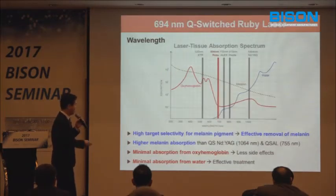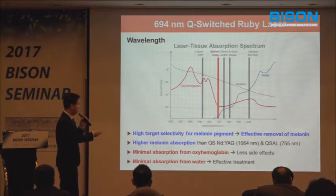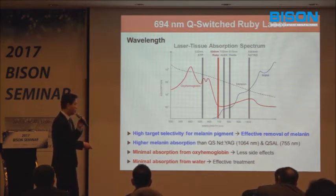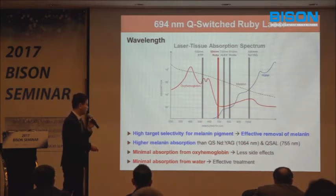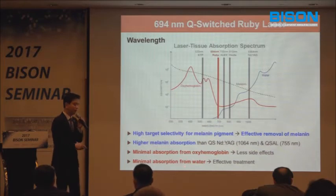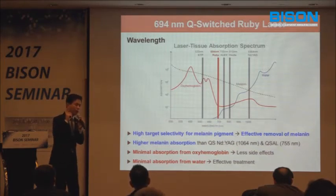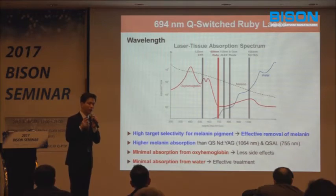Q-switched ruby laser is very highly absorbed by the epidermal melanin, with minimal absorption by hemoglobin. So the result is very effective to remove melanin. It has very few side effects and water absorption is minimum. In a single word, it is a very safe laser for pigment treatment.